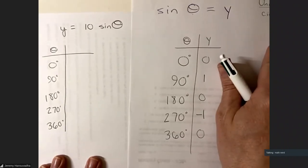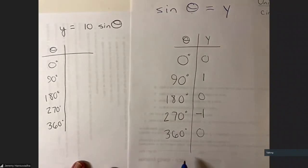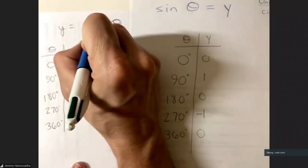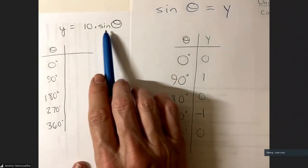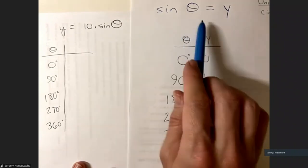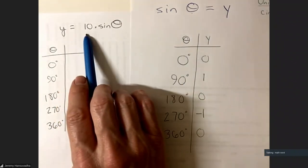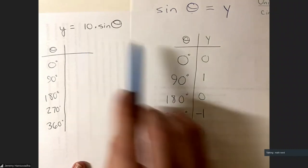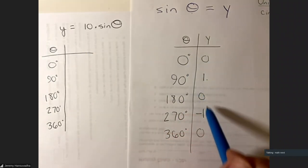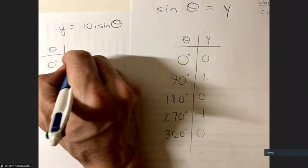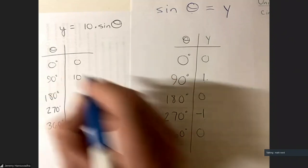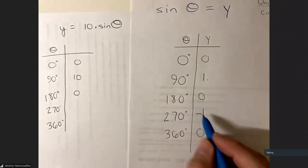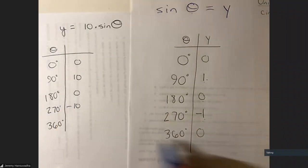Let's make a table and compare sine of θ to 10 sine of θ. The 10 is joined by multiplication, so we take the values from sine θ — which are 0, 1, 0, −1, 0 — and multiply each by 10: 0 times 10, 1 times 10, 0 times 10, negative 1 times 10, and 0 times 10.